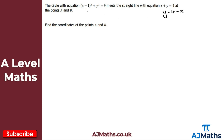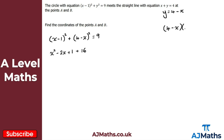I'll substitute y equals four minus x into the equation of the circle. We get x minus 1 all squared plus four minus x all squared equals 9. Expanding x minus 1 squared gives x squared minus 2x plus 1. Expanding four minus x squared gives 16 minus 8x plus x squared. Adding these together and setting equal to 9 gives 2x squared minus 10x plus 17 equals 9.